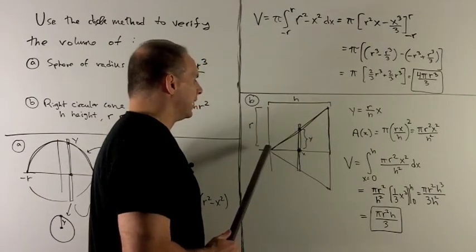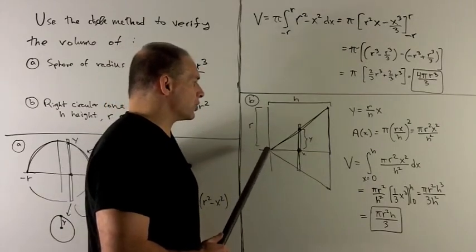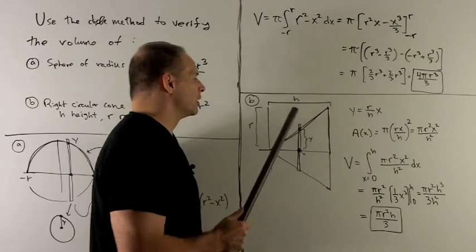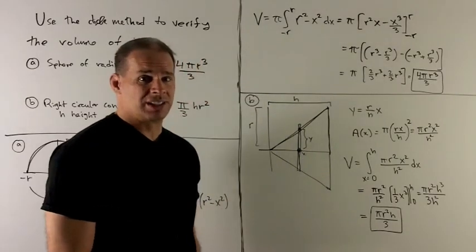Okay, it goes through zero, so all I need is the slope to get the equation. Slope is just the rise over run. So we have rise r, run h. So we're looking at the equation y equals r over h times x.